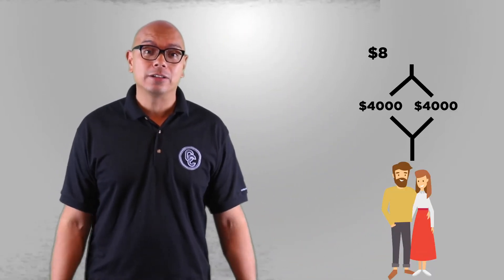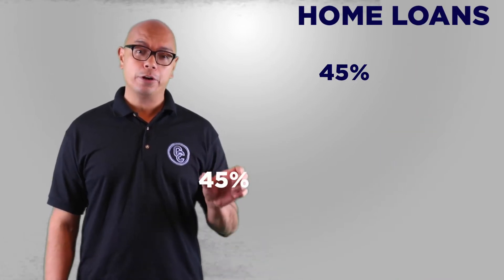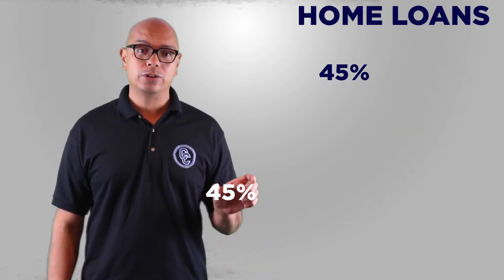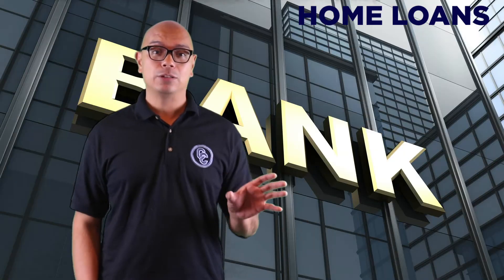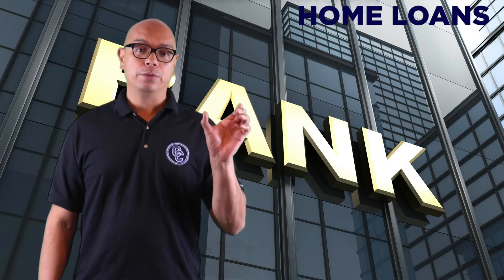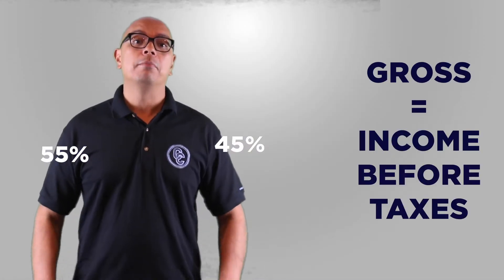Basically I have a client that makes about $8,000 a month combined household income and they're wondering how much they can afford for their home. So basically when it comes to home loans, it's anywhere between 45% gross to 55% gross. That means the banks want to see anywhere between 45% to 55% of your income before taxes.